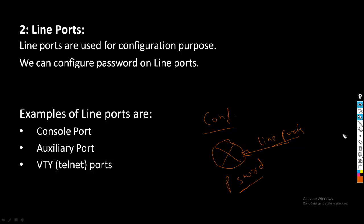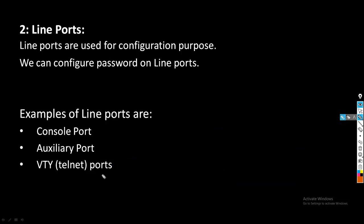A few examples of line ports are: console port, auxiliary port, and line VTY port. In the case of line VTY ports, there are two requirements before a router or switch will accept a VTY connection: first, an IP address must be configured on an interface; second, at least one VTY port must be configured with a password.